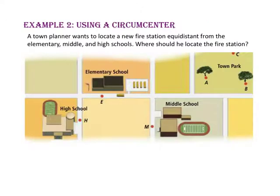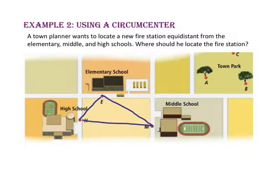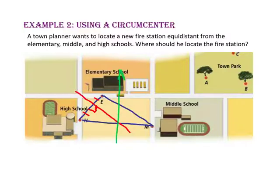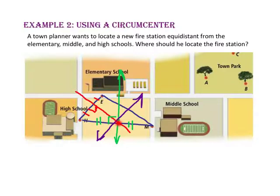In example 2, we will use a circumcenter. A town planner wants to locate a new fire station equidistant from the elementary school, middle school, and high school. Where should he locate the fire station? Let's start by connecting the three points of the schools to form a triangle. Since the circumcenter of a triangle is equidistant from the vertices, we can find our perpendicular bisectors, and where they intersect we will have our circumcenter. The perpendicular bisector of segment EH, the perpendicular bisector of segment HM, and the perpendicular bisector of segment EM all meet at the circumcenter, which is the perfect place for the new fire station — equidistant from the elementary, middle, and high schools.